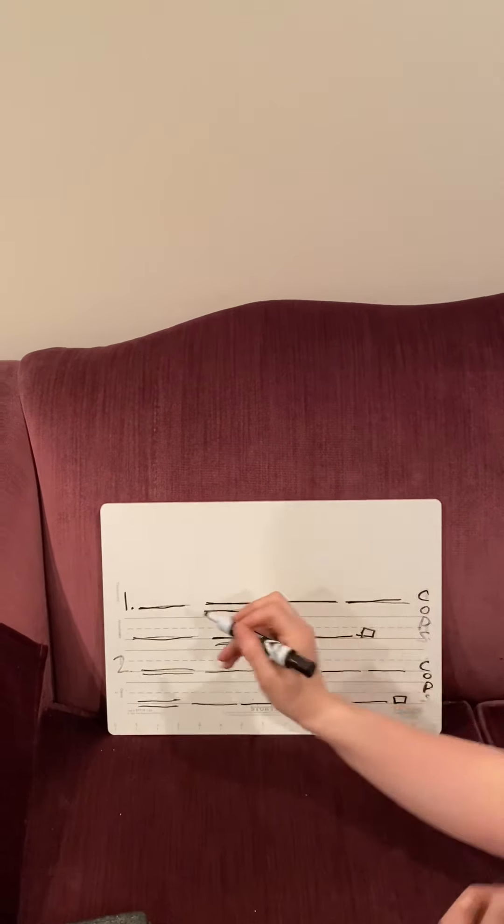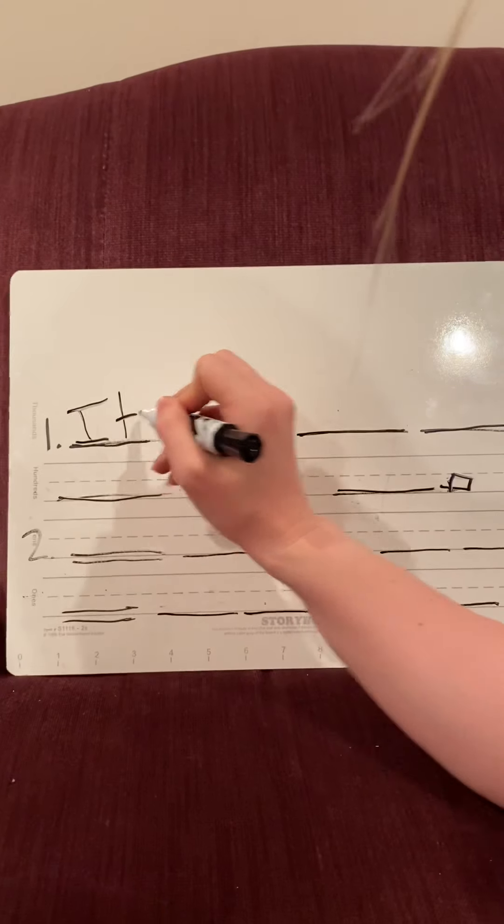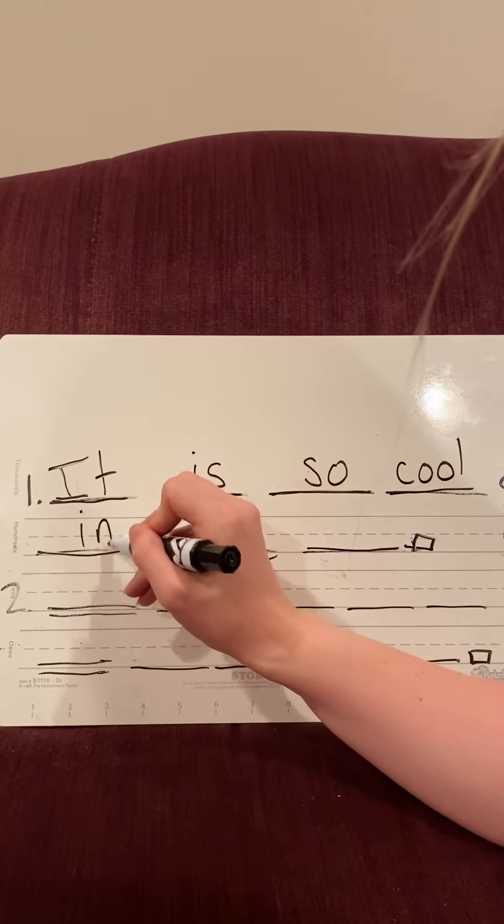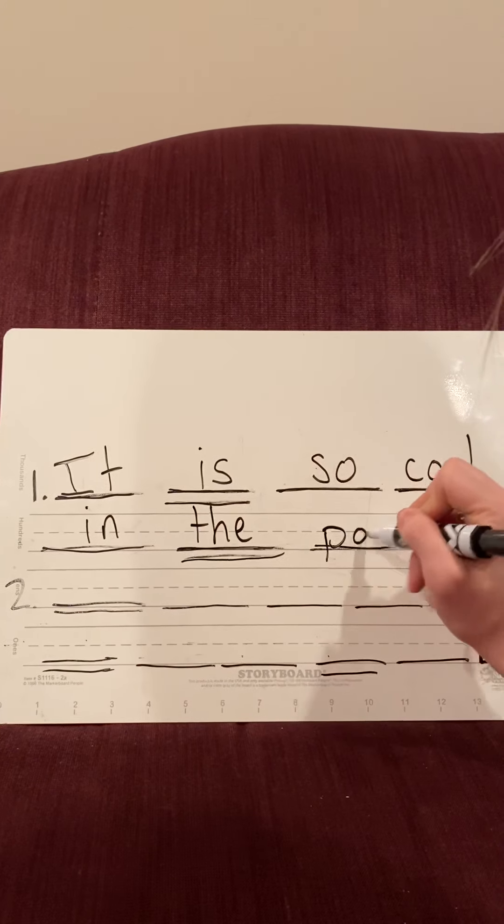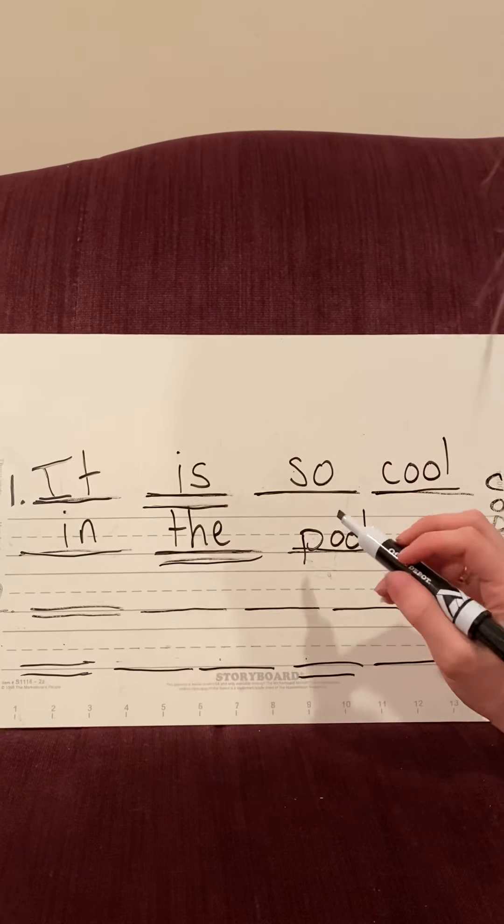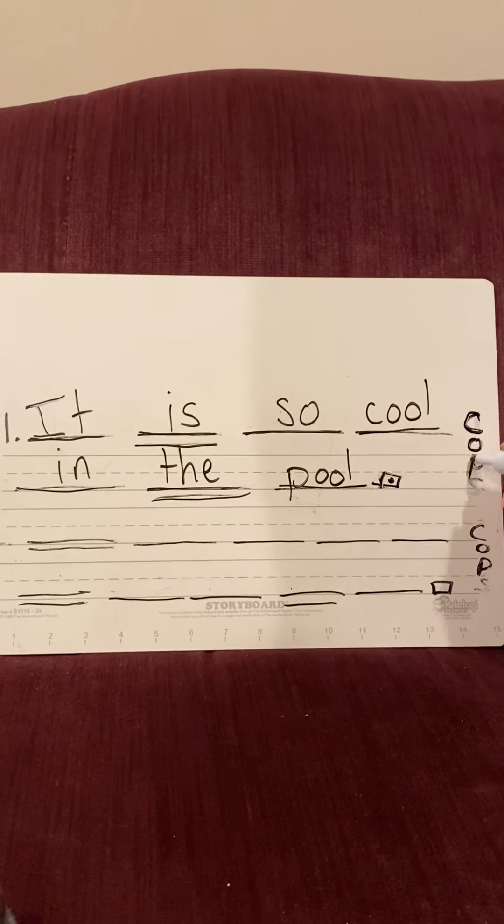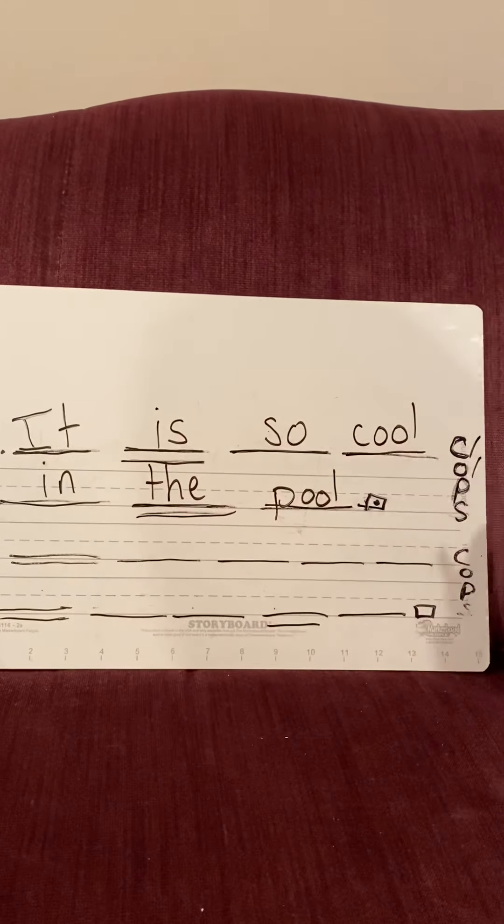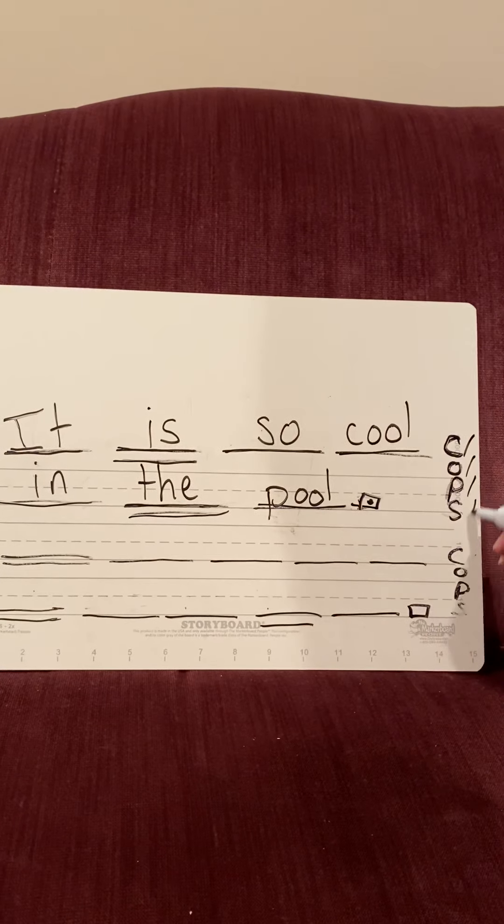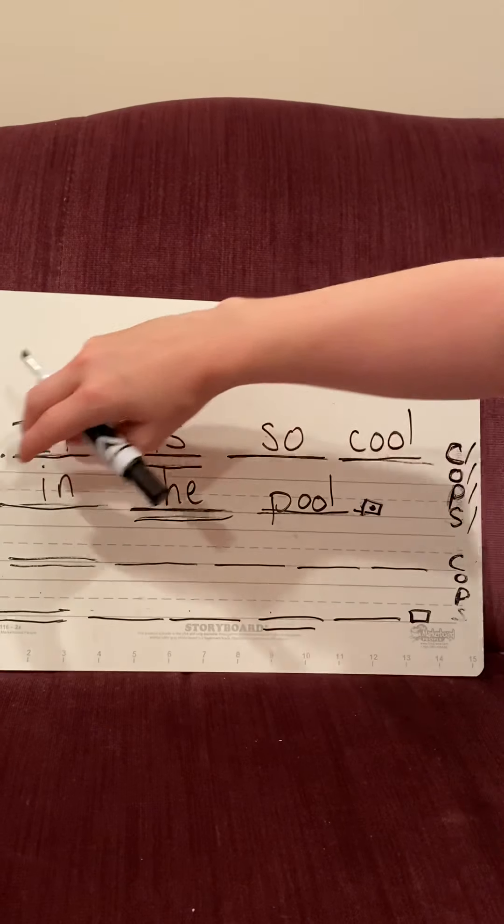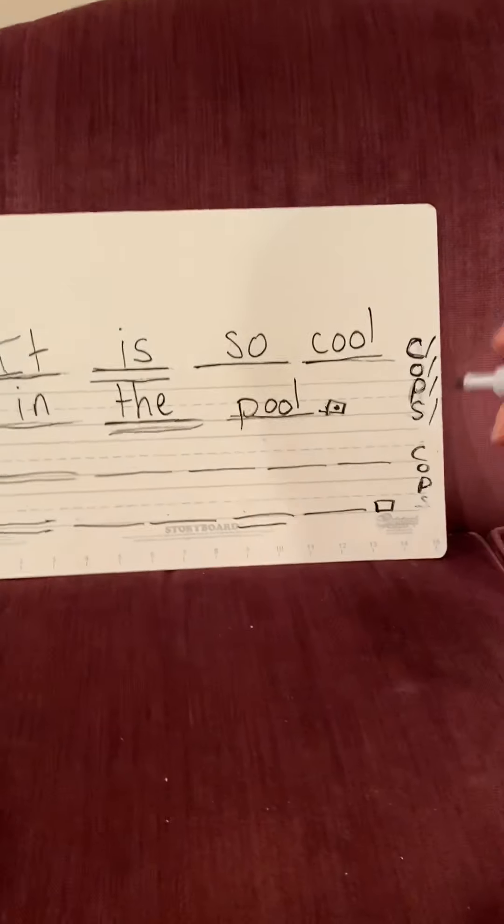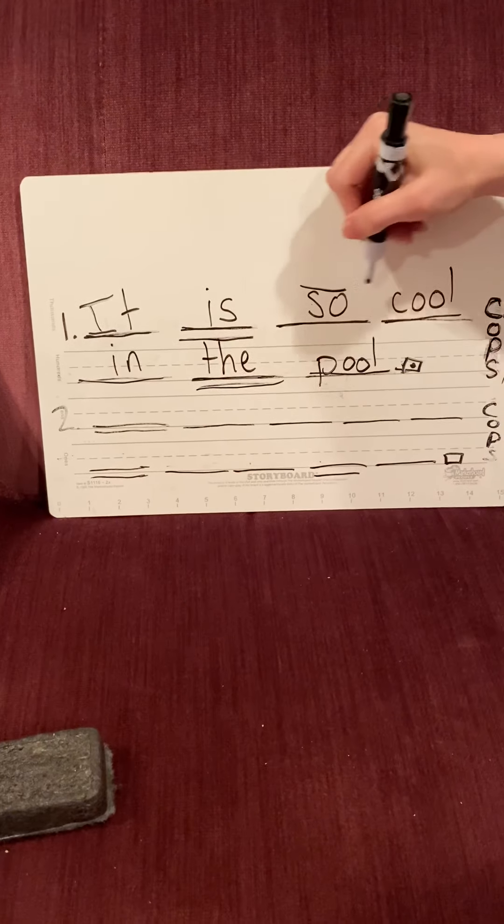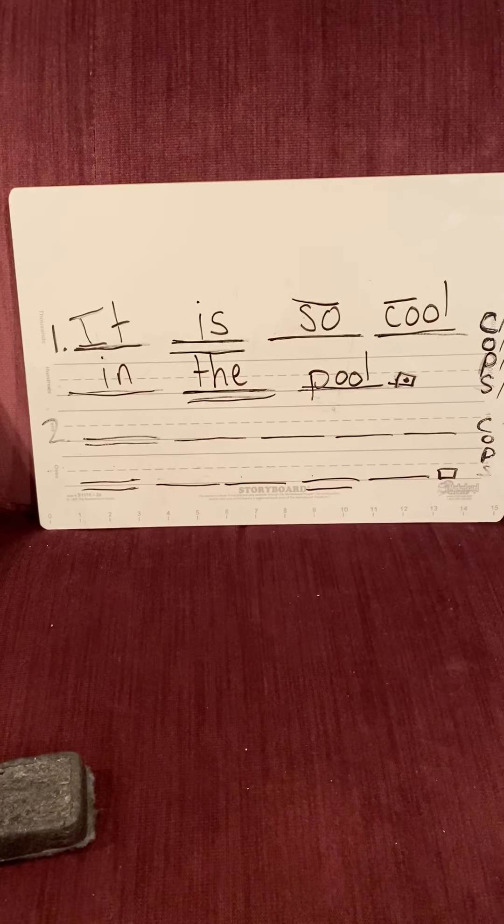Now we'll check it together. It is so cool in the pool. Make sure you're checking for COPS to make sure your sentence is following all the rules. We have a capital letter I. Order: it is so cool in the pool. Punctuation: you should have your period there. Spelling: check for pool and cool. Obviously it, is, so, in, and the are important to look at, but I'm hoping that you got those right. Also, make sure your S and O are the same size, just like your C and O. I don't want S or C to be too much taller than those Os or I'll think they're a capital letter.